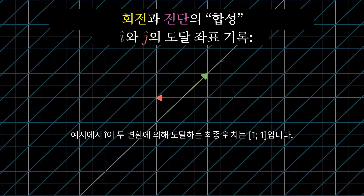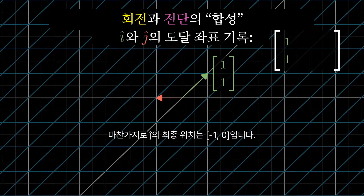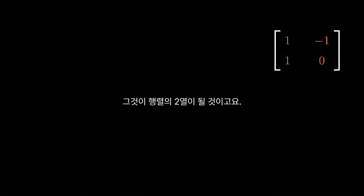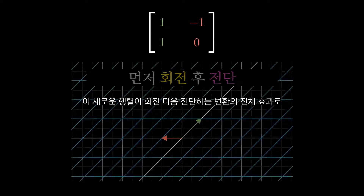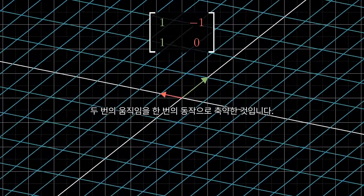In this example, the ultimate landing spot for i-hat after both transformations is 1, 1, so let's make that the first column of a matrix. Likewise, j-hat ultimately ends up at its location, so we make that the second column of the matrix. This new matrix captures the overall effect of applying a rotation then a shear, but as one single action rather than two successive ones.